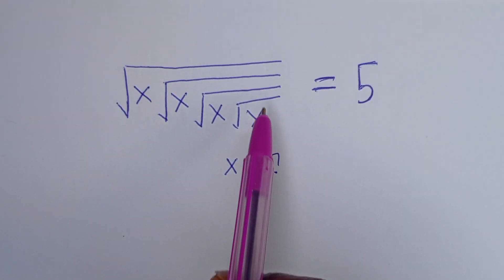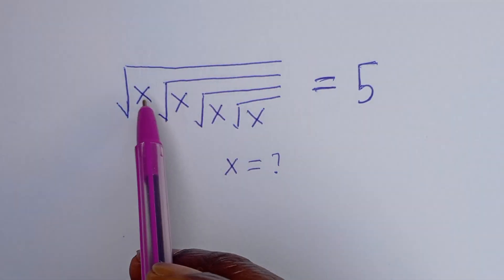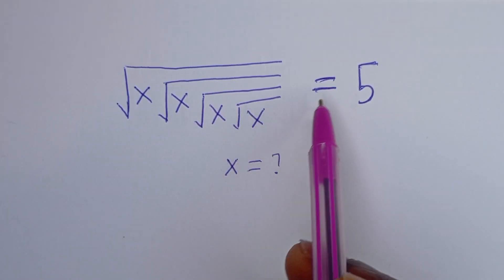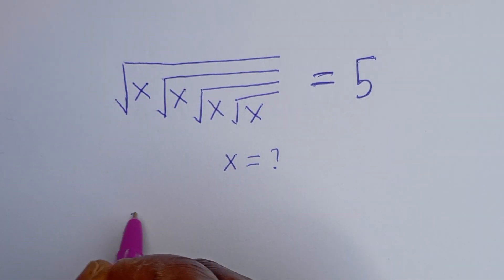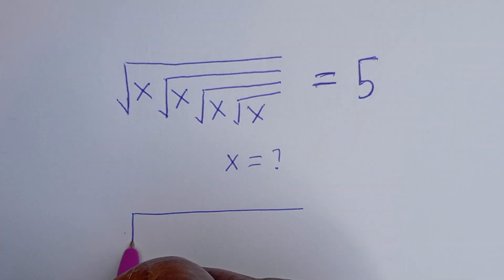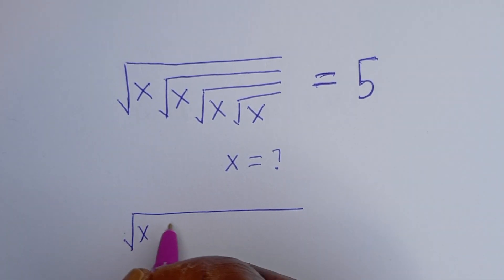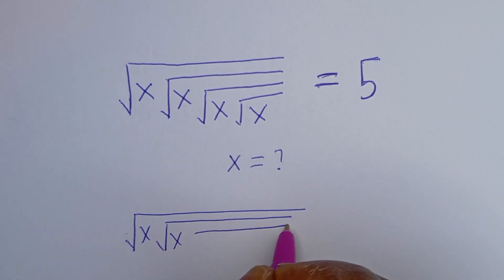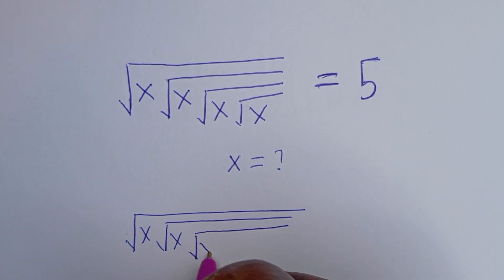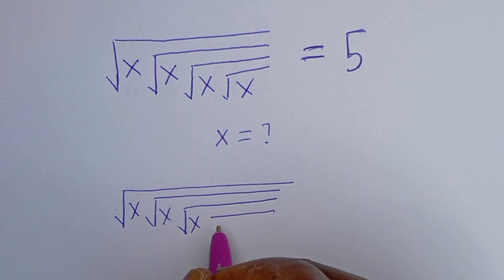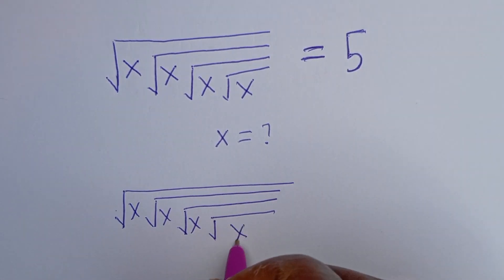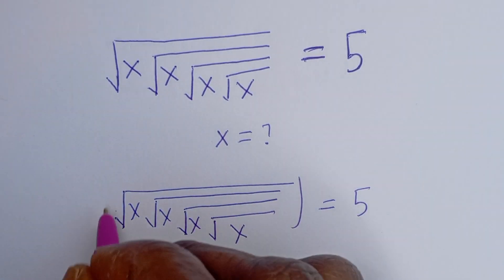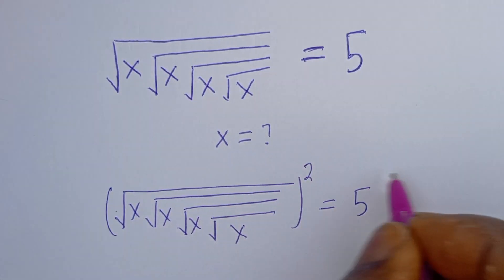Hello. How to solve for s in this equation: square root of a square root of a square root of a square root of s is equal to 5. Now here we have square root of square root of square root of square root of s, and that square root of s is equal to 5. Let's put both sides of this equation to the square.